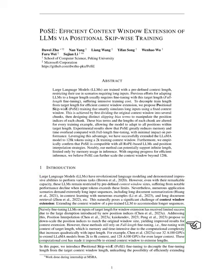One might think that simply fine-tuning LLMs on longer inputs would do the trick, but this approach hasn't been very successful. It introduces disruption due to new position indices. Some have proposed down-scaling position indices to match the original window size, showing some improvement. However, this still relies on fine-tuning with the full target length context, which is memory and time-intensive due to computational complexity that increases with input length, making it practically impossible to extend to extreme lengths.